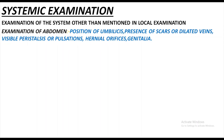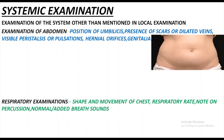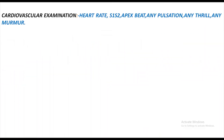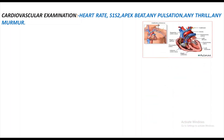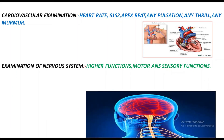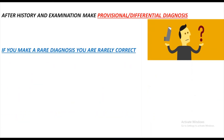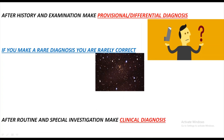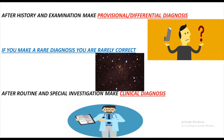Systemic examination covers all systems other than the local examination. For abdominal examination, look for position of the umbilicus, presence of scars or dilated veins, visible peristalsis or pulsations, herniation, or genitalia. Respiratory examination includes shape and movement of the chest, respiratory rate, percussion, and breath sounds. Cardiovascular examination includes heart rate, S1 and S2, apex beat, pulsations, thrills, and murmurs. Examination of the nervous system includes higher mental function and motor and sensory examination. After history and examination, make a provisional diagnosis, then a final clinical diagnosis after routine and special investigations.